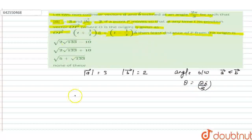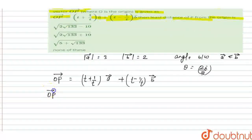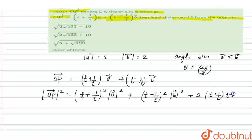This expression is dependent on the time t. OP vector is given as (t + 1/t) vector a + (t - 1/t) vector b. Squaring both sides, |OP|² equals (t + 1/t)² |vector a|² + (t - 1/t)² |vector b|² + 2(t + 1/t)(t - 1/t) vector a · vector b.